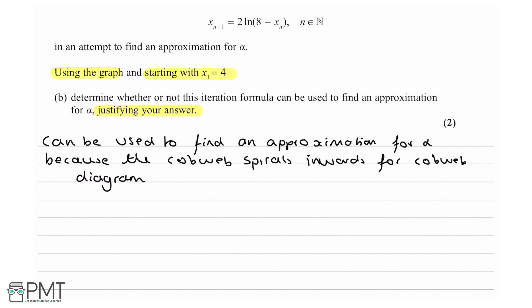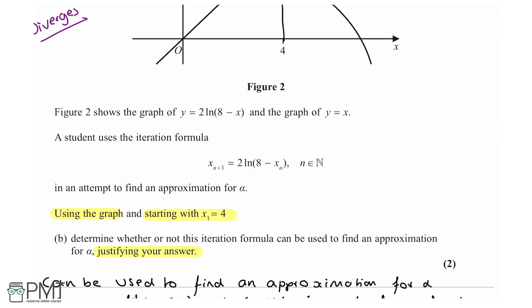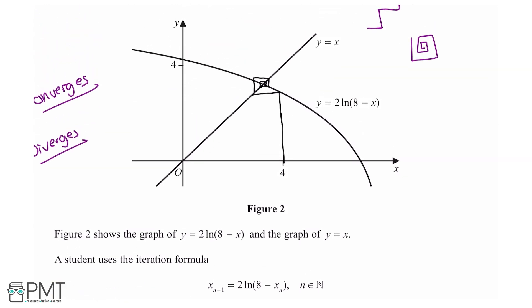This question is also worth two marks. The way you get your two marks: the first one comes from an annotated cobweb diagram on Figure 2. You need to start at x_1 equals 4 and you need to have at least two spirals. If we look here, we have one spiral which goes along here and we have a second one, so we know that we've gotten two spirals and that gets us our first mark.